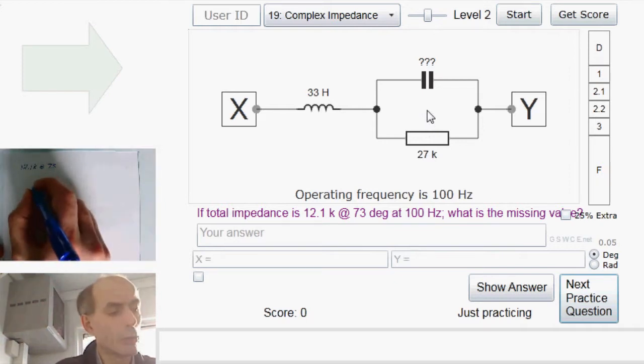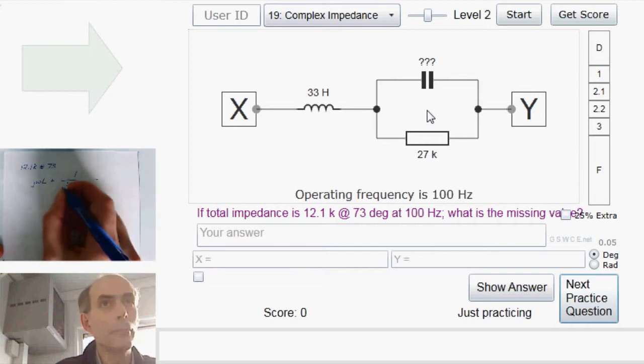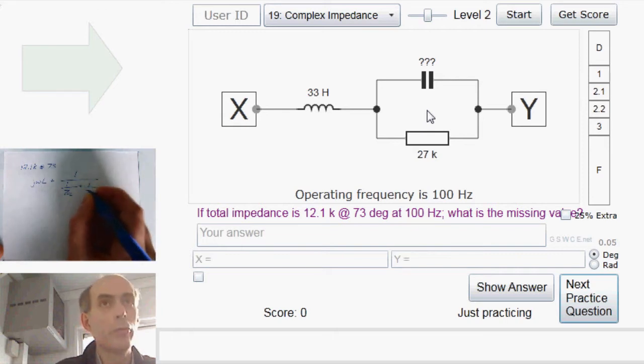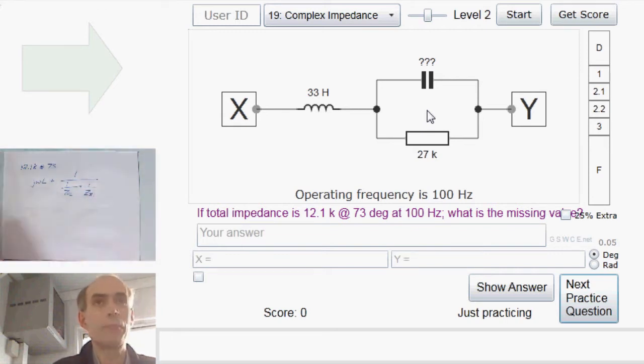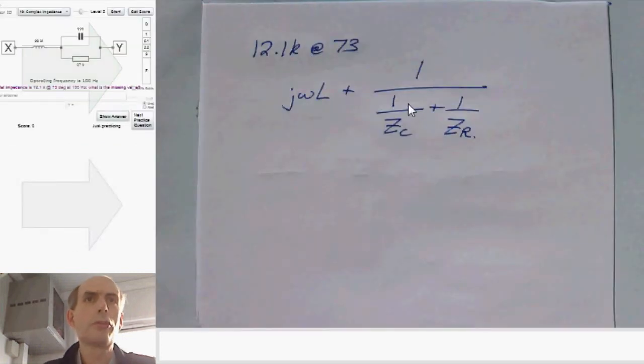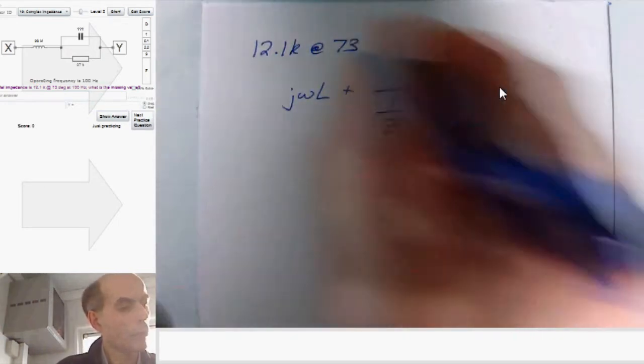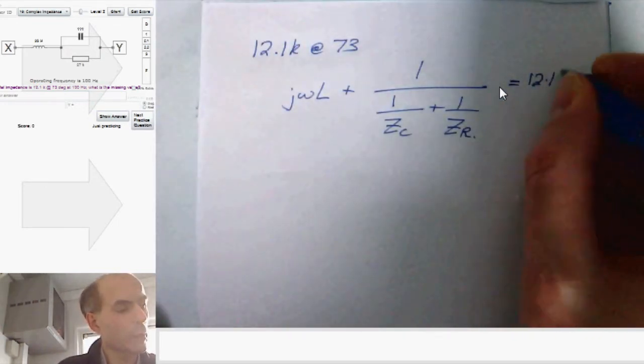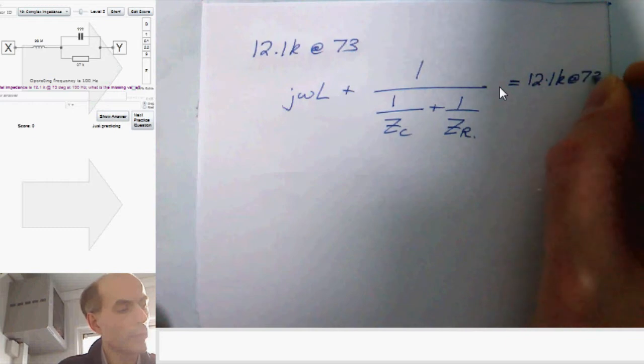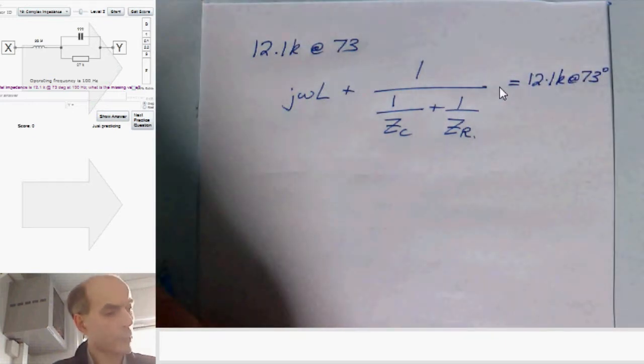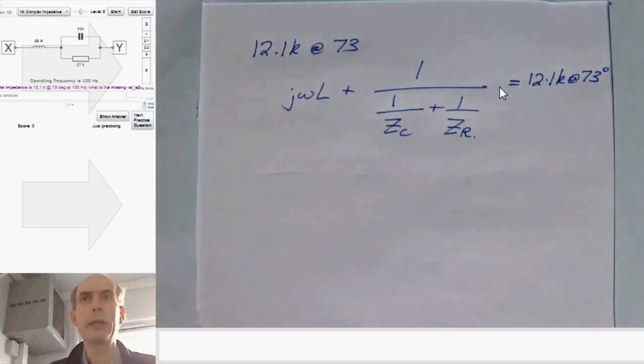So that would be J omega L plus 1 over 1 over ZC plus 1 over ZR. That's just standard result for two components in parallel. And that lot is 12.1k at 73 degrees. We know omega, we know L, and we know ZR.